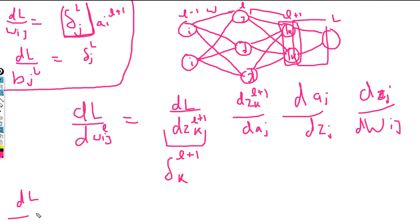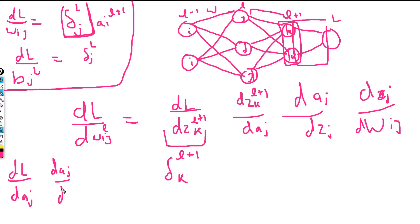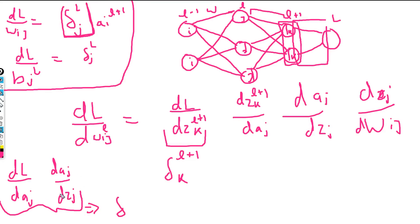This is the same thing we did in the last video: dL/da_j, and then a_j is affected by dz_j. We converted this into delta — we said this part is delta. So we have found the delta value of the next layer, and we are now finding the gradients of the current layer.